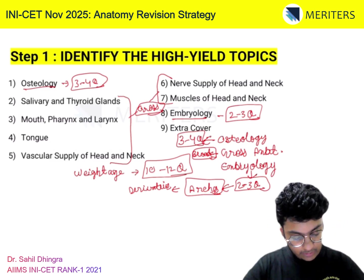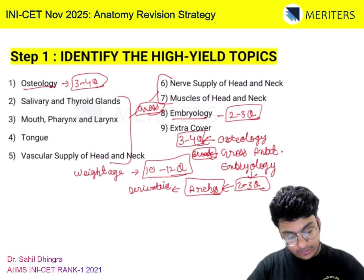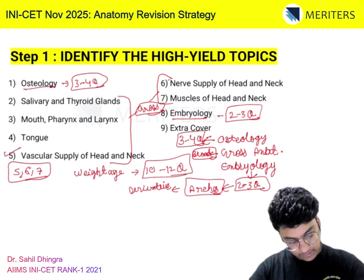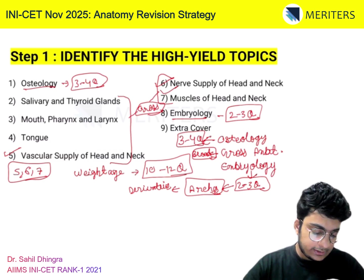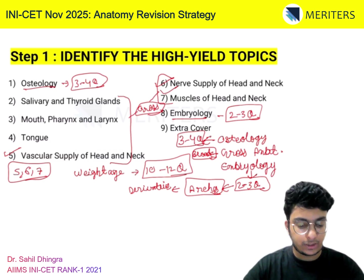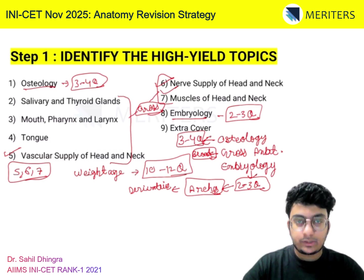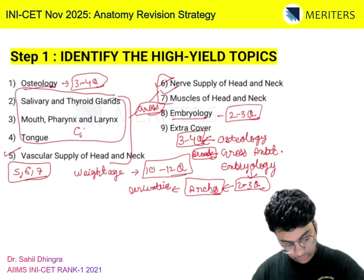When you read the Gross Anatomy chapters, you have to club chapters 5, 6, and 7 together. These cover vascular supply, nerve supply, and the muscles of head and neck. These are very generic chapters — they will ask you about the entire vascular or nerve supply of the head and neck without segregating by specific structures like tongue or pharynx. That is why these are the most important after Osteology and Embryology.